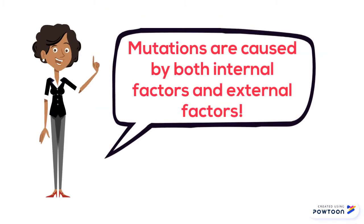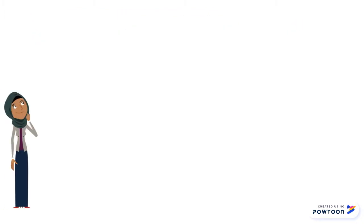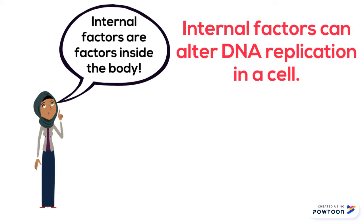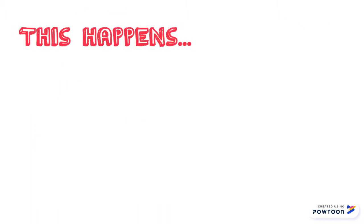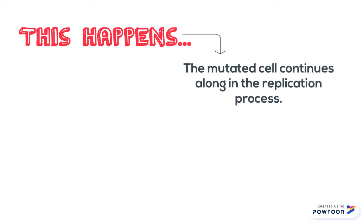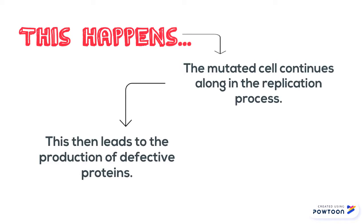Mutations are caused by internal and external factors. When we talk about internal factors, we're talking about intrinsically, mistakes that happen inside of our cells. For example, during DNA replication, when there is a mistake in the duplicating of the template DNA strand, and that mistake does not get repaired and continues to move along the replication process, this then leads to the production of defective protein structures with defective functions that can affect the organism as a whole.